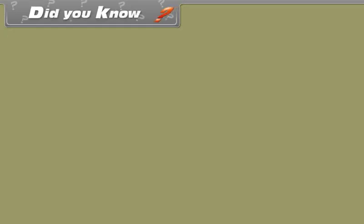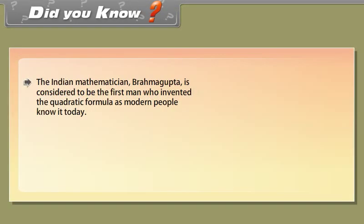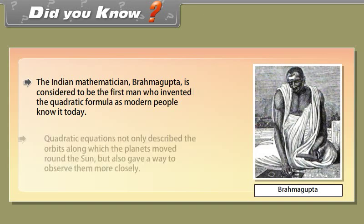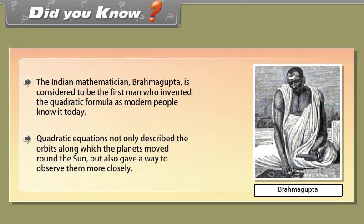Did you know? The Indian mathematician Brahmagupta is considered to be the first man who invented the quadratic formula as modern people know it today. Quadratic equations not only describe the orbits along which the planets moved around the sun, but also gave a way to observe them more closely.